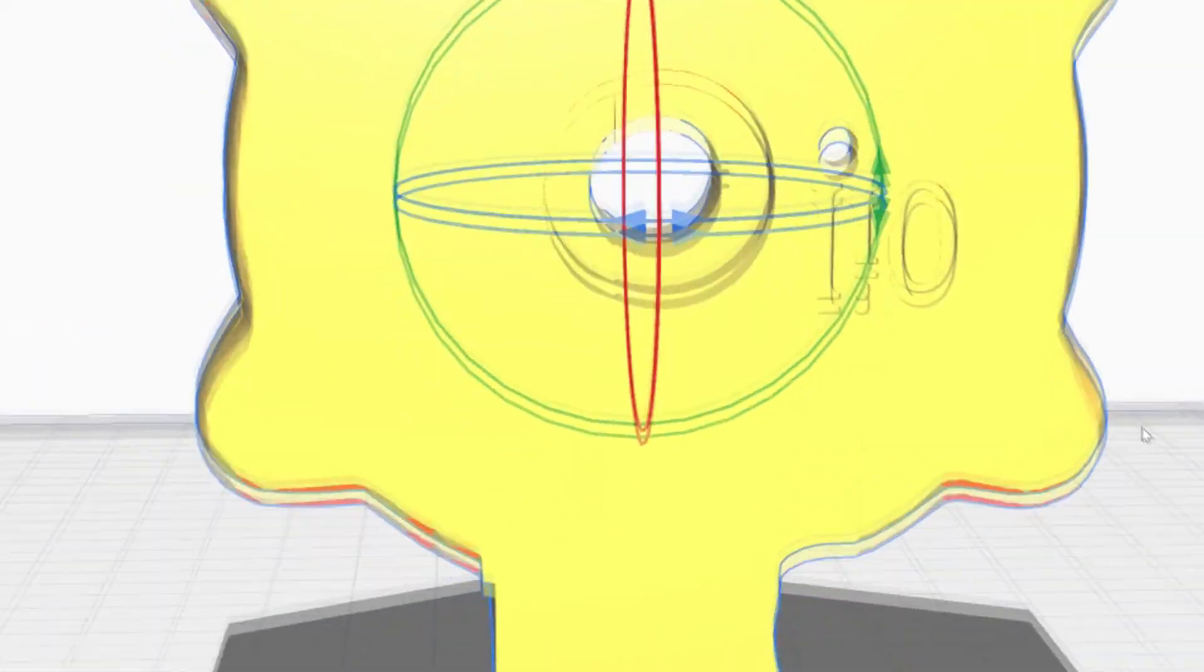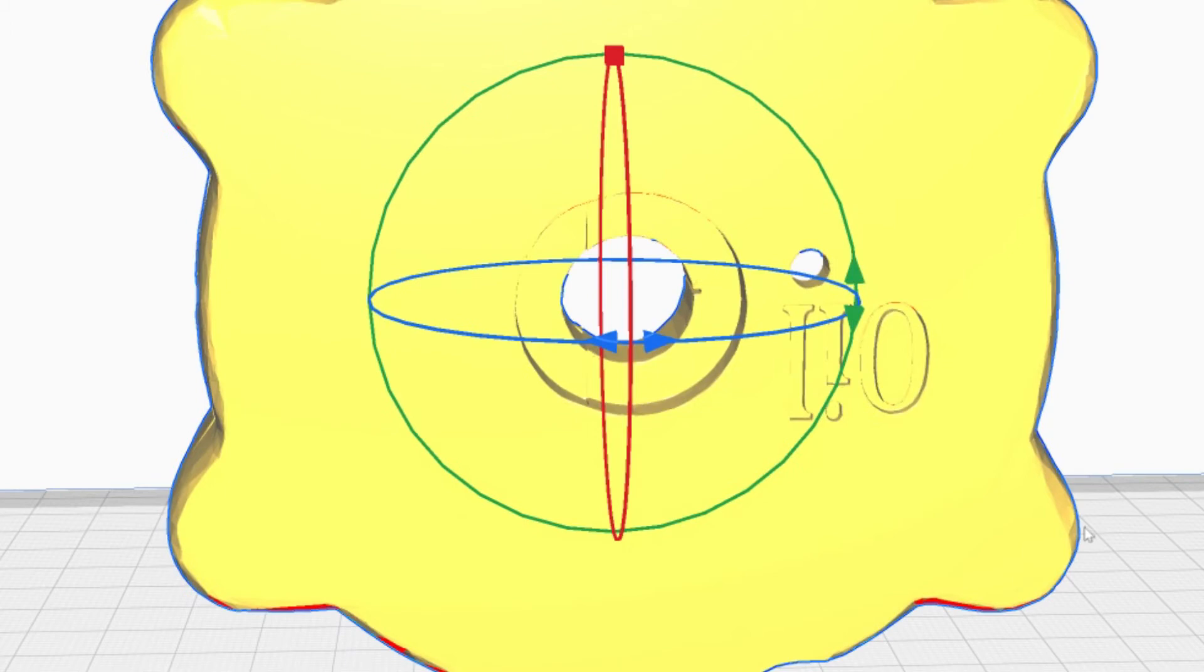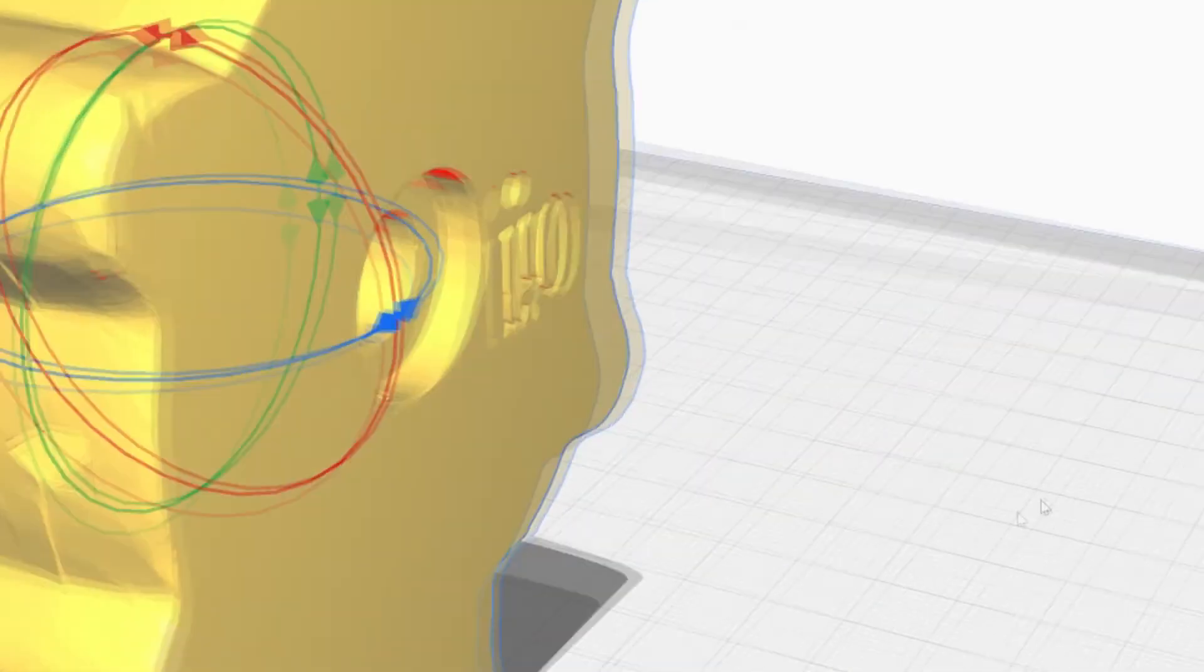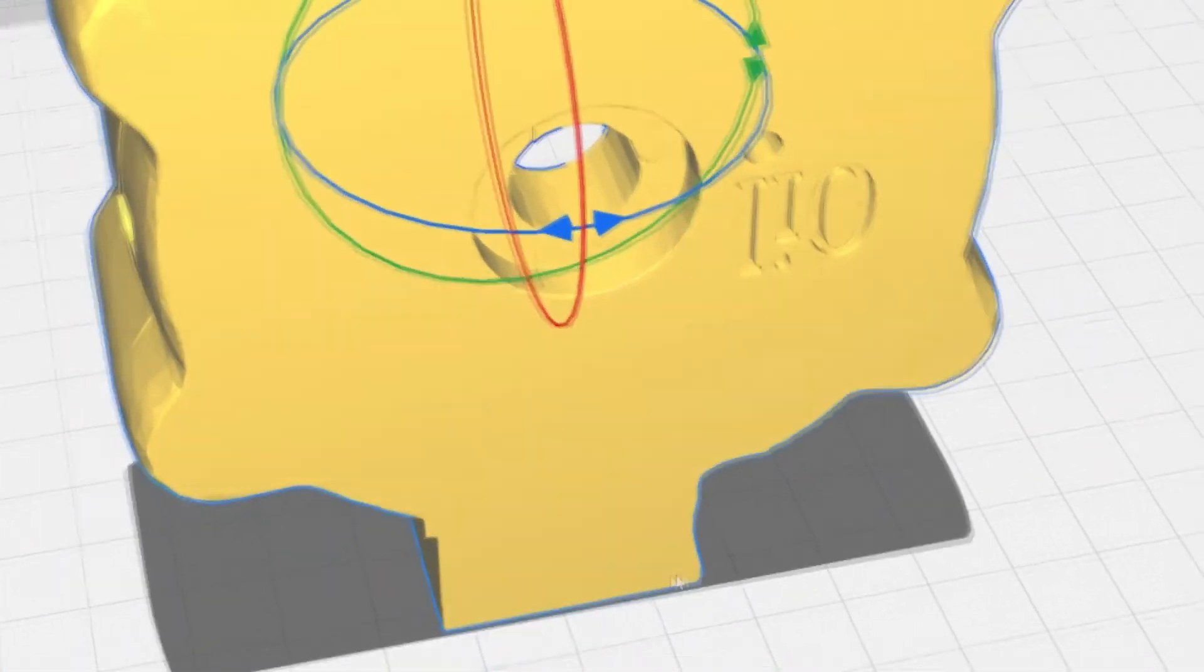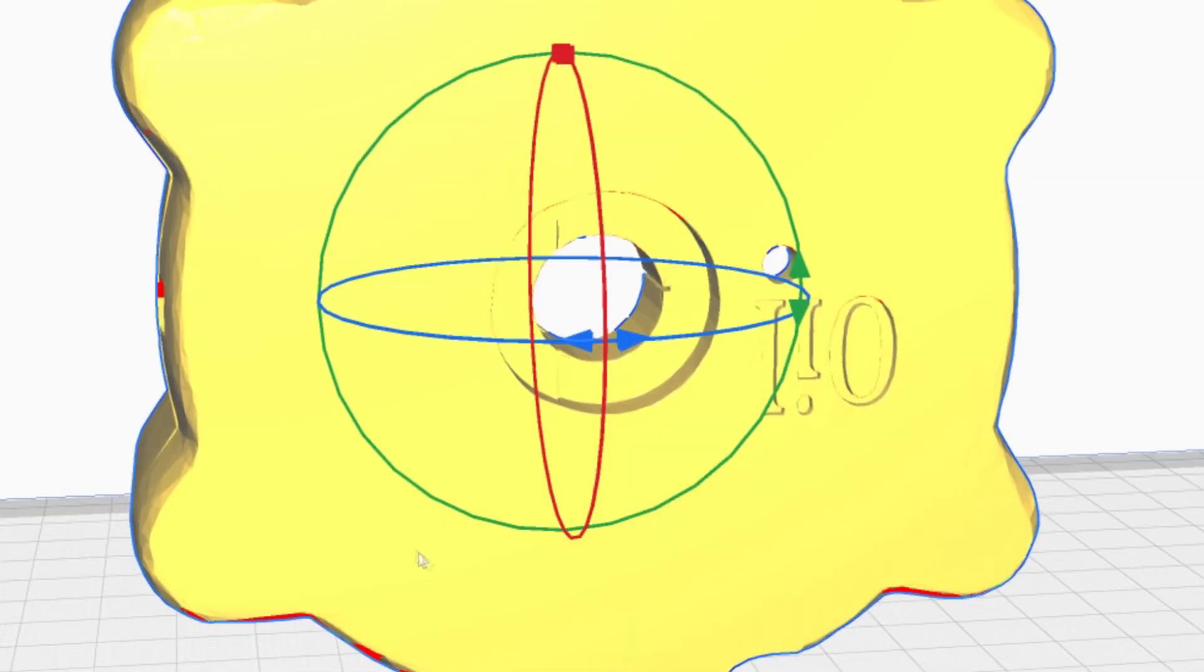And then I can hold the mouse scroll wheel down and move up and down and rotate it. Obviously I don't want a model like this. This is just to demonstrate that you can rotate 90 degrees by just clicking on the arrows.